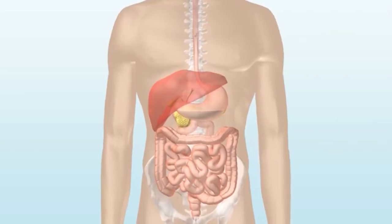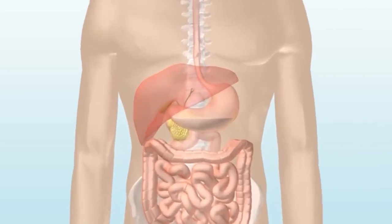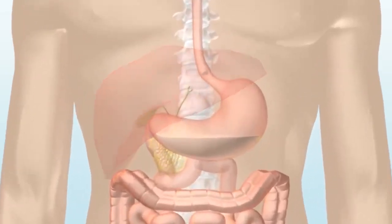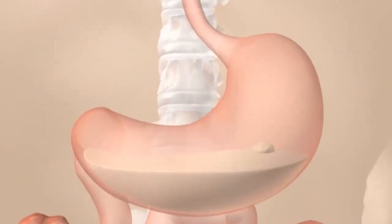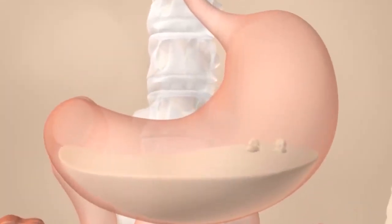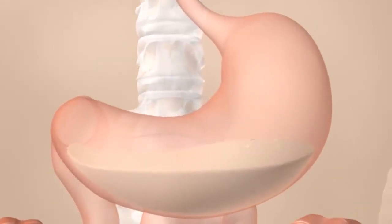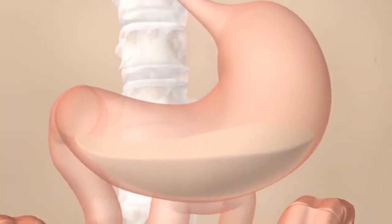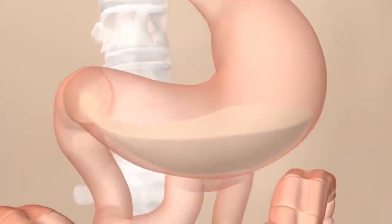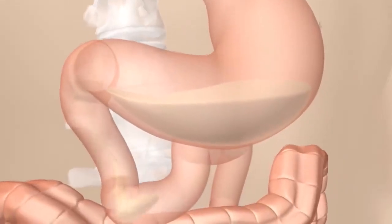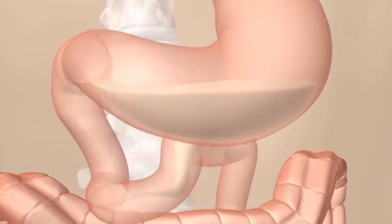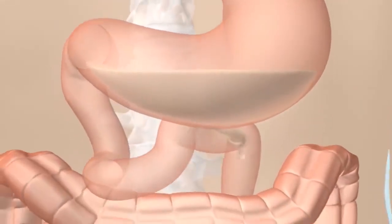In the stomach, the food is broken down into smaller pieces and digestive juices are added. The now liquid food is passed on to the small intestine where the nutrients are absorbed and digested.